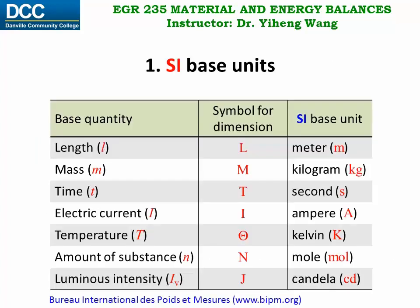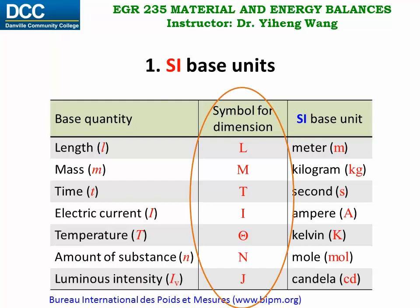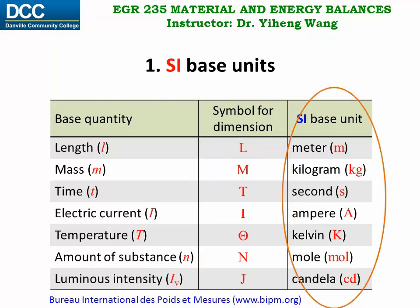In the previous video, we already introduced the seven base quantities, the associated base dimensions, and their associated base units: meter for length, kilogram for mass, second for time, ampere for electric current, kelvin for temperature, mole for amount of substance, and candela for luminous intensity.